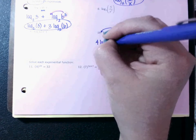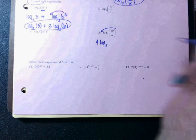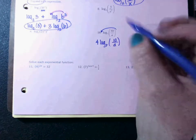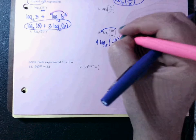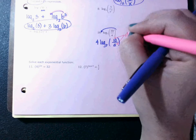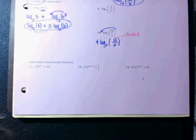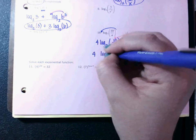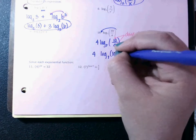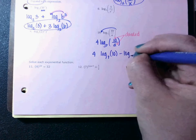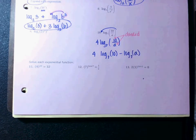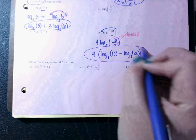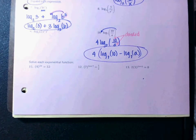Take a look at number ten. Remember this four can move down to the front, so it would be 4·log base 7 of (ten over a). Then since ten and a are divided, when you separate them you have to use subtraction: 4·log base 7 of 10 minus log base 7 of a. Also keep in mind that since this four was originally on the outside, you'd have to put parentheses around it to show that both terms are included.